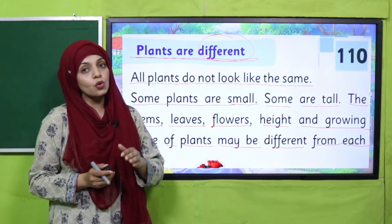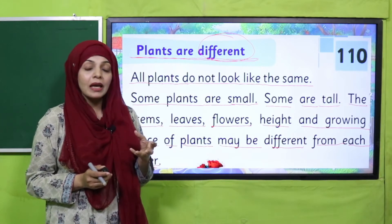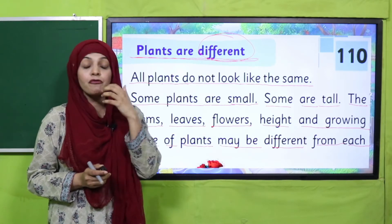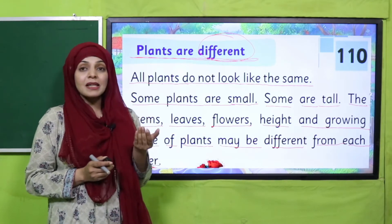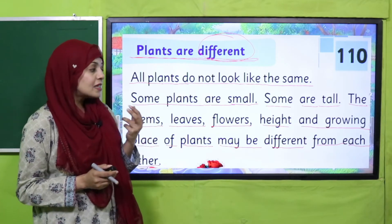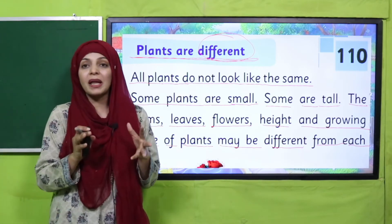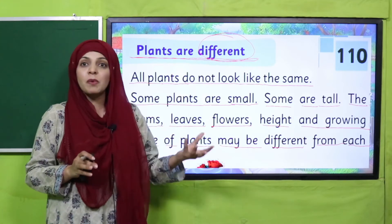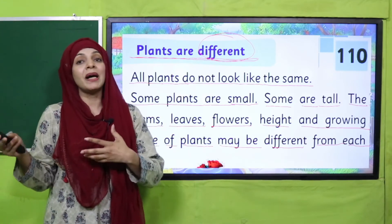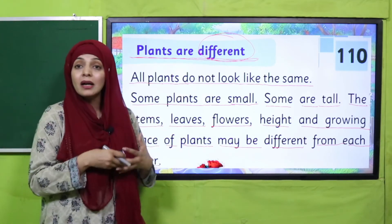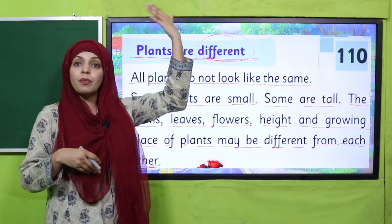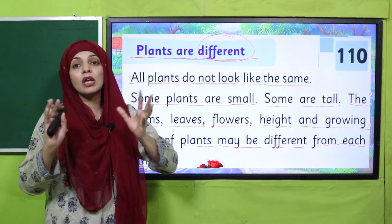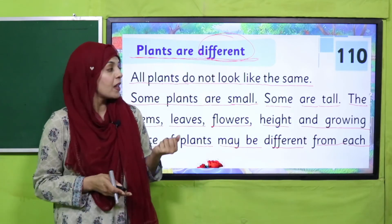Some plants are big, some are small. Some bear fruits, some are vegetables. Their heights are different — some are tall, some are short. Their growing places are also different: some of them grow in deserts, some grow in water, some grow in our gardens, and some grow in mountains. So plants differ in their growing places as well.